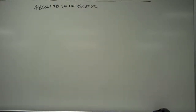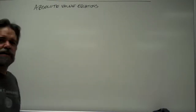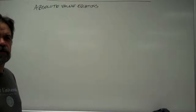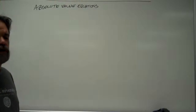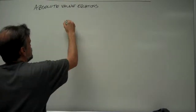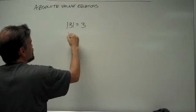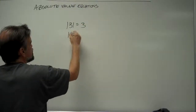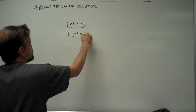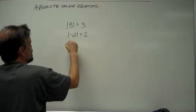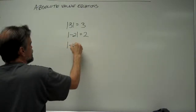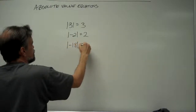In this video we're going to be solving absolute value equations. Think back on what absolute value means. When you have the absolute value of 3, that equals 3. When you have the absolute value of negative 2, that equals 2. When you have the absolute value of negative 18, it equals 18.